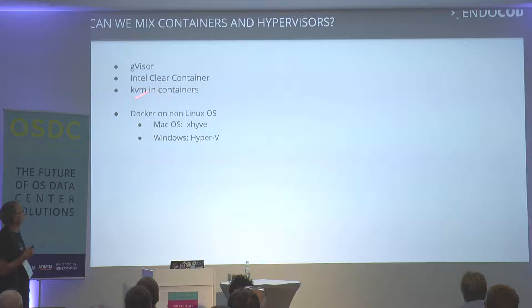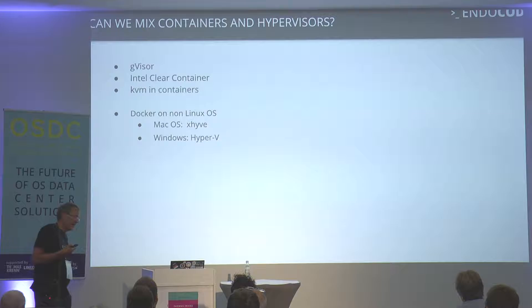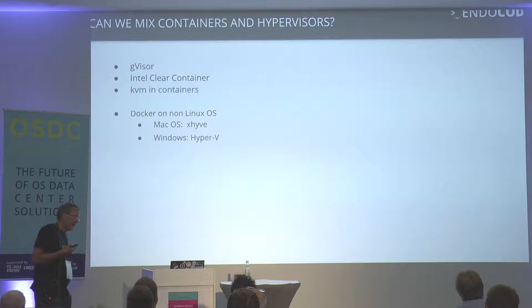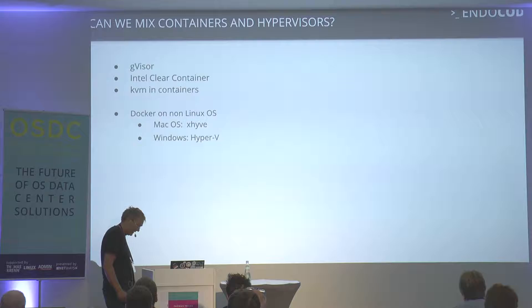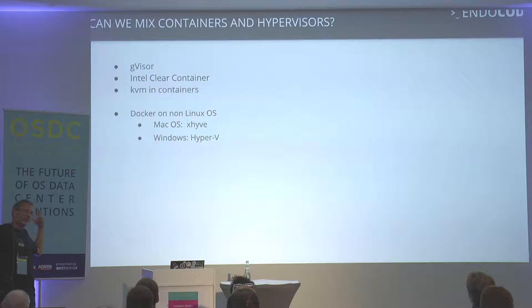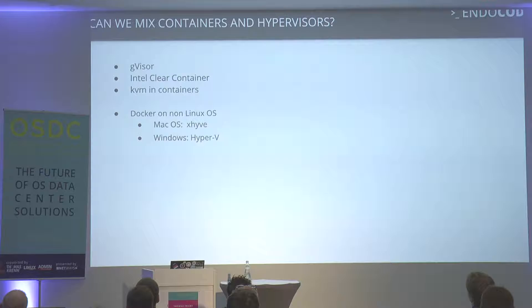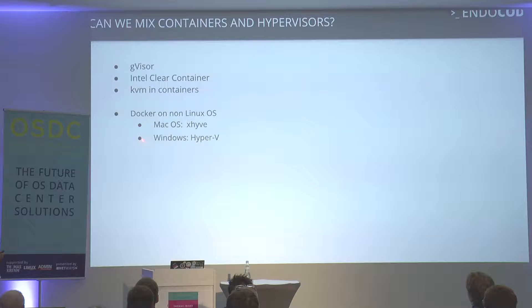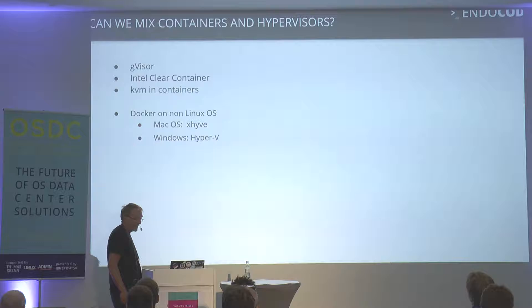There are new hypervisor-like options. gVisor from Google is a Linux in user space — a Go application that runs instead of a hypervisor and can be used as a container runtime. It prevents kernel calls considered insecure. Intel Clear Containers also work, with Ubuntu packages available. On non-Linux OS you have Xen or Hyper-V. You can mix these approaches — you'll lose some performance, but may gain security depending on your threat analysis.